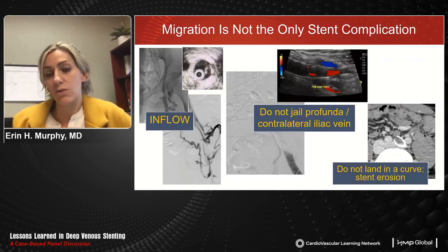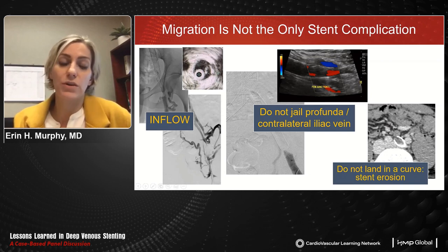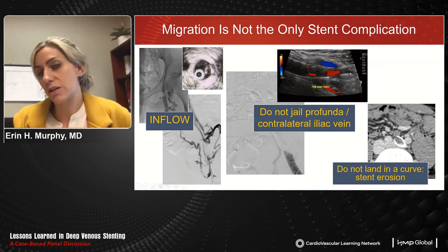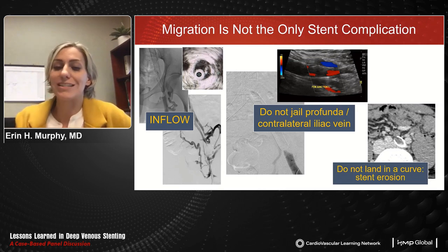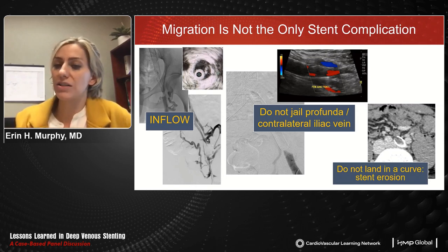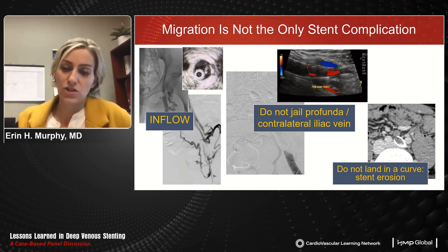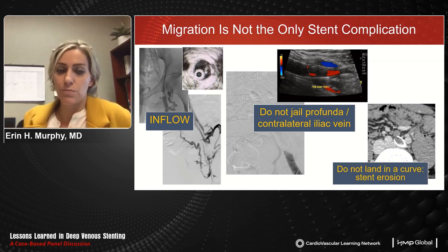Migration is not the most common stent complication. In Dr. Murphy's practice, the most frequent complication is stent occlusion from inflow issues, followed by jailing of the contralateral vein causing DVT, jailing of the profunda when the stent is taken too low, and stents straightening the vein. With 60 or 80 mm stents landing at the pelvic bend on the left side, they can eat through the vein wall distally or proximally. He has seen several such patients from short nitinol stents. Education remains the biggest challenge in preventing these complications.